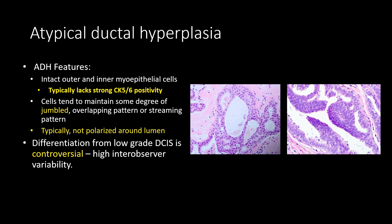Compare this to atypical ductal hyperplasia. Again, we'll see an intact layer of myoepithelial cells, but we're going to see jumbled glandular cells that are not polarizing clearly around a lumen, and a slightly weaker CK5/6 positivity. An important point about ADH is that it can be difficult to differentiate from low-grade DCIS, with a lot of inter-observer variability, making the diagnosis somewhat controversial.